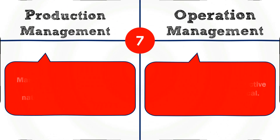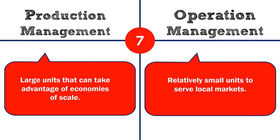Our seventh difference: in production management, manufacturing involves large units that can take advantage of economies of scale — meaning when we produce more, the per-unit cost would be lower.